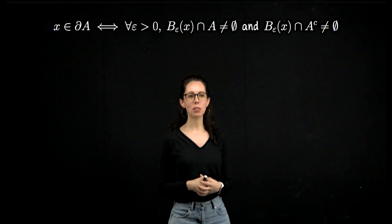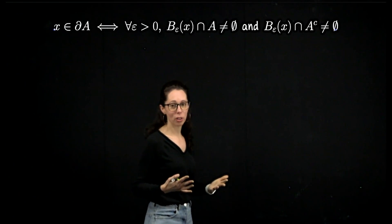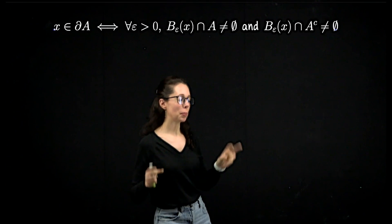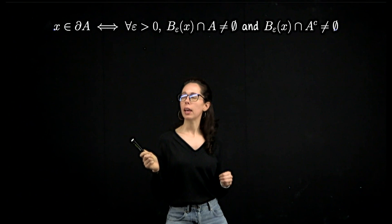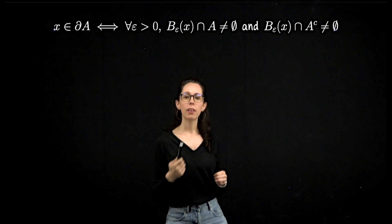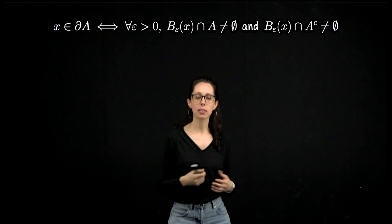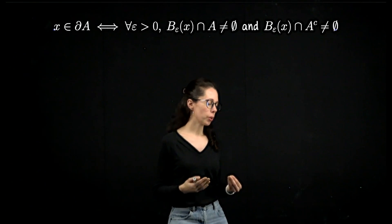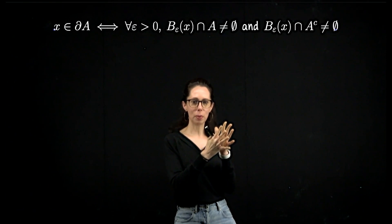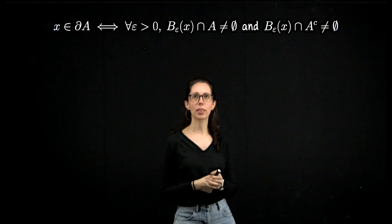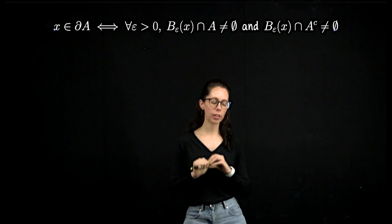For this first characterization of boundary, while I've written this very symbolically, what we're saying is something very natural. X is in the boundary of A if and only if every open neighborhood of X picks up something from A and something from A complement. That feels natural because if you're on the boundary, you're kind of between the two sets — near you should be points from both sets. We are going to prove this using a dichotomy: X is either in A or it's not in A, leading to a proof by cases.